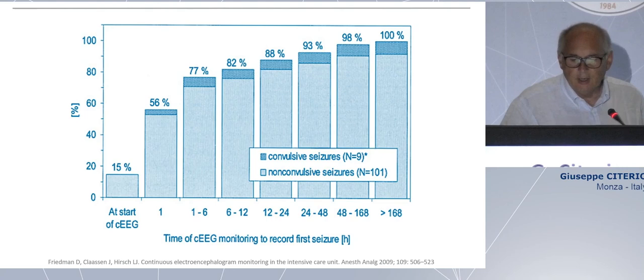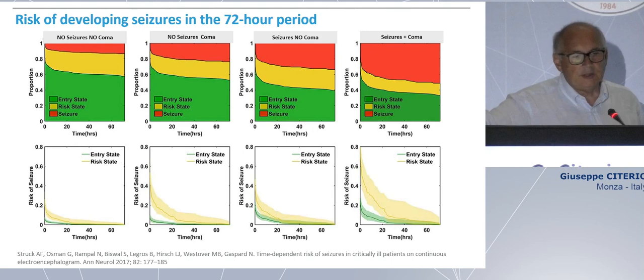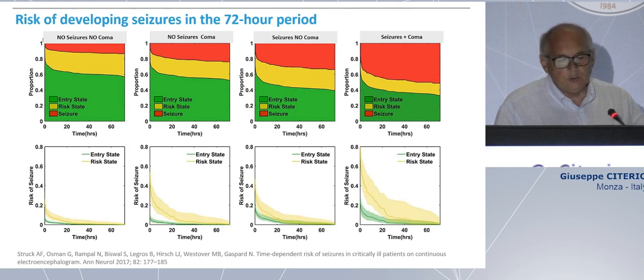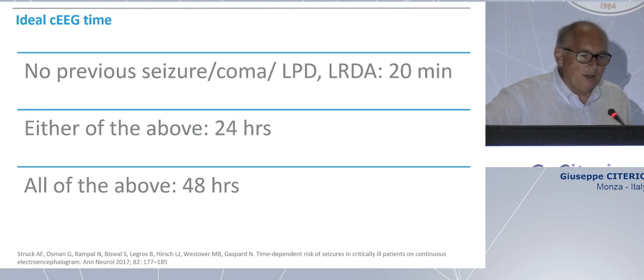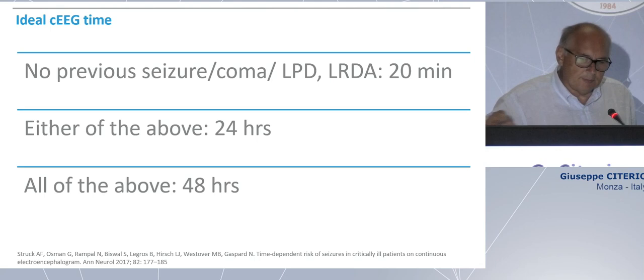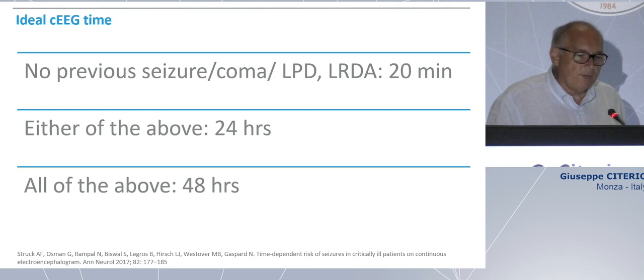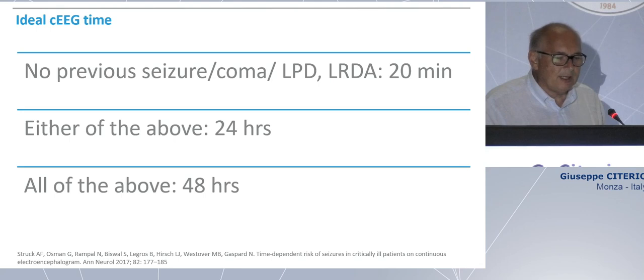But we cannot say that all patients need to be monitored for more than 100 hours because it's a huge amount of effort. So the group of Gaspard and others looked at the risk of developing CISO in the first two or three days after admission to intensive care. They looked at some characteristics: history of CISO, being in coma, and combining these elements. If the patient doesn't have any previous CISO, is not in coma, and has some lateral discharges on the EEG, 20 minutes is probably enough. If there is either of those factors, 24 hours is suggested. If there is no previous CISO, coma, and some lateral discharge, a longer period is needed to identify CISO.